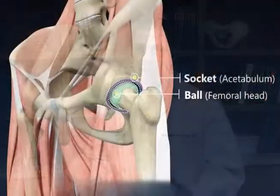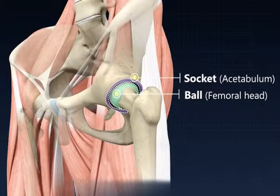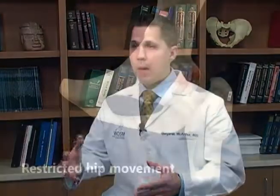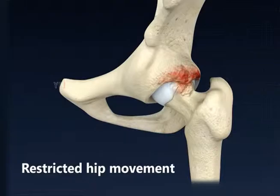Structural hip disease defines the condition where the mechanical environment of the hip is abnormal. The hip is a ball and socket joint and ideally it should be in a perfect balance between freedom of motion and stability. If that balance is disrupted in one direction or the other, it can result in problems.